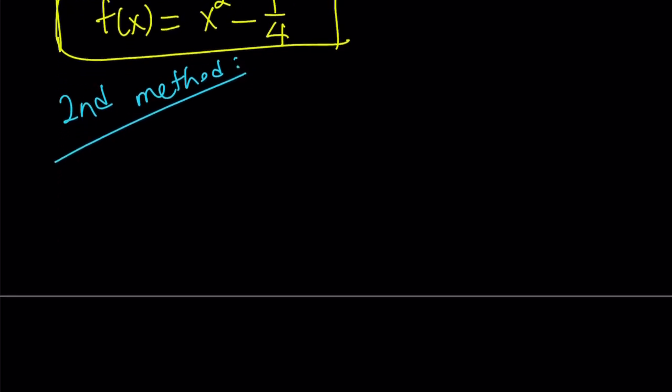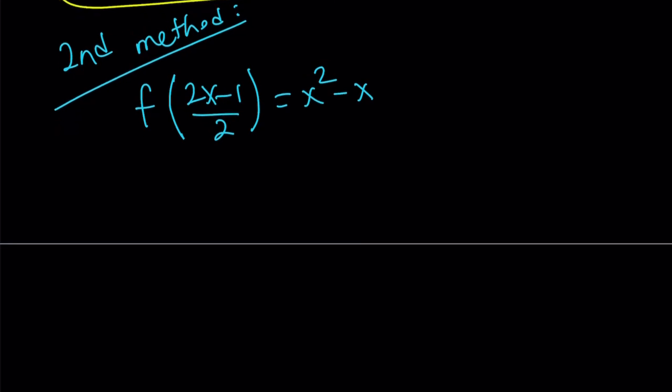For the second method, we're going to, first of all, let me rewrite the equation every time so you get to see the problem. Now, for the second method, I'm going to manipulate the right hand side a little bit and write it as 1 fourth times 4x squared minus 4x. This is a really nice strategy.